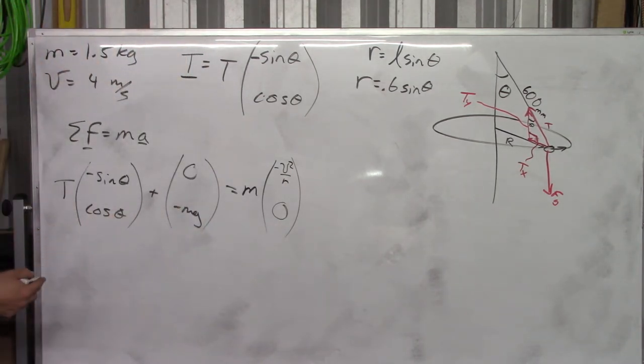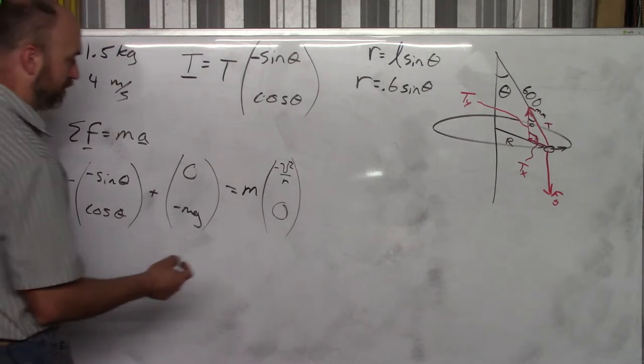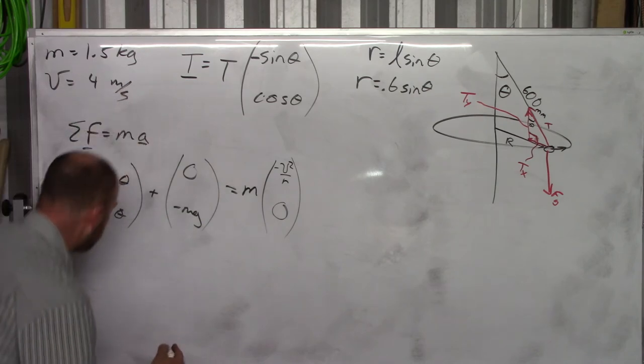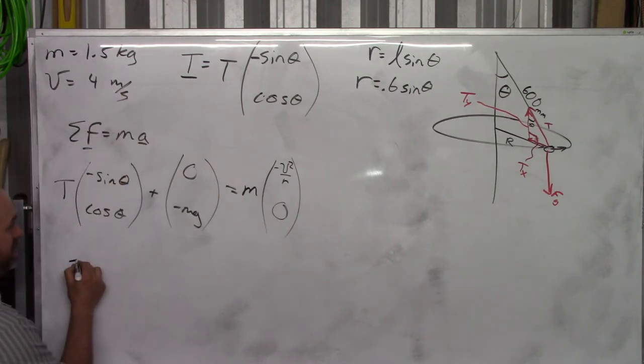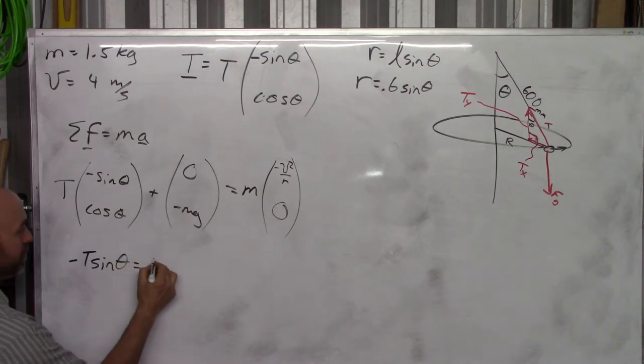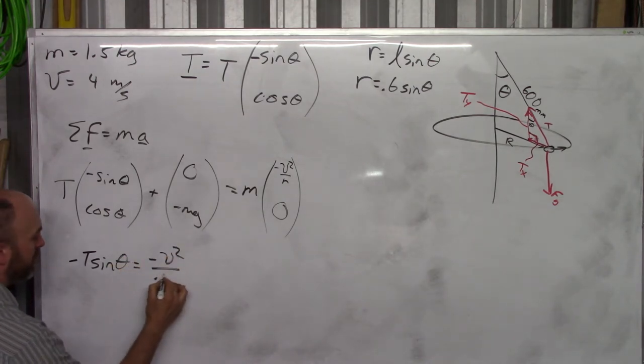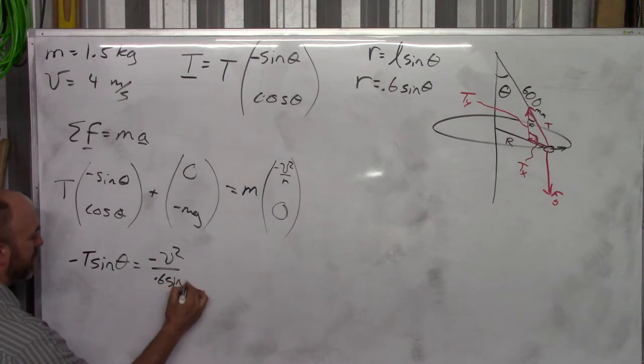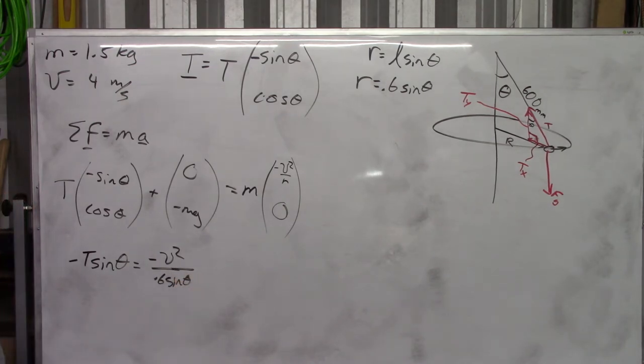Okay. So now we've got two equations. And two unknowns. So we write this out. The equation number one is going to be minus T sin theta is equal to minus v squared over 0.6 sin theta. See where I got that? Minus T sin theta came here.